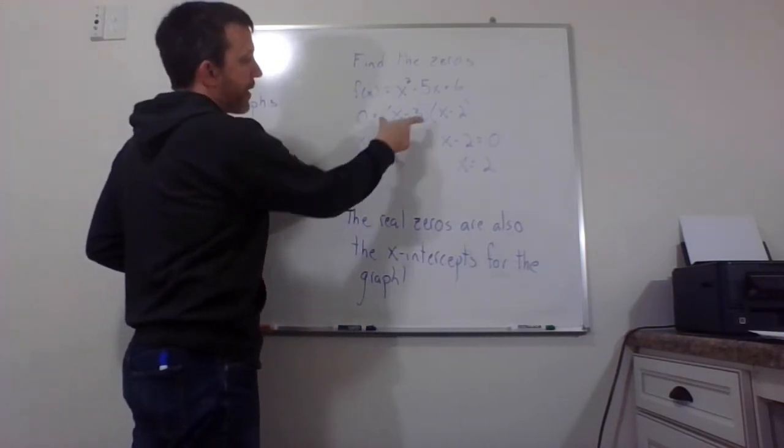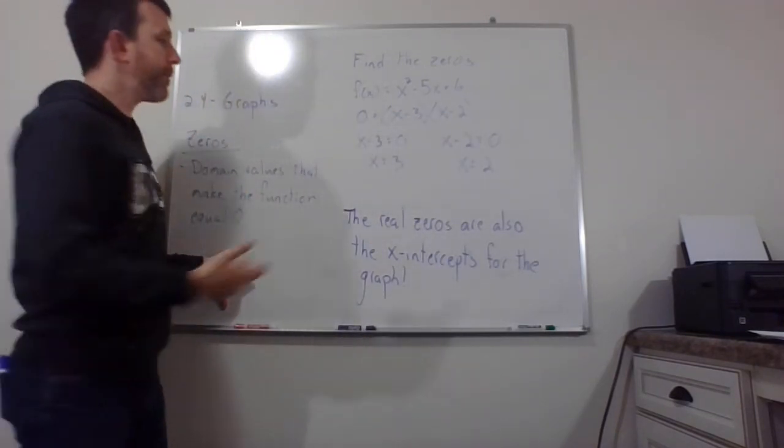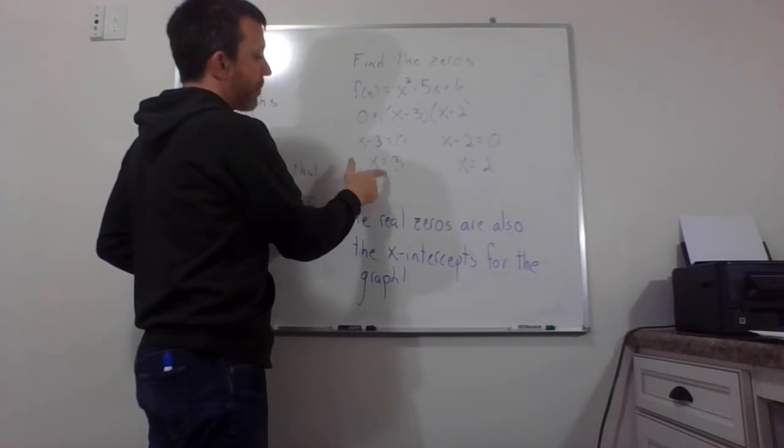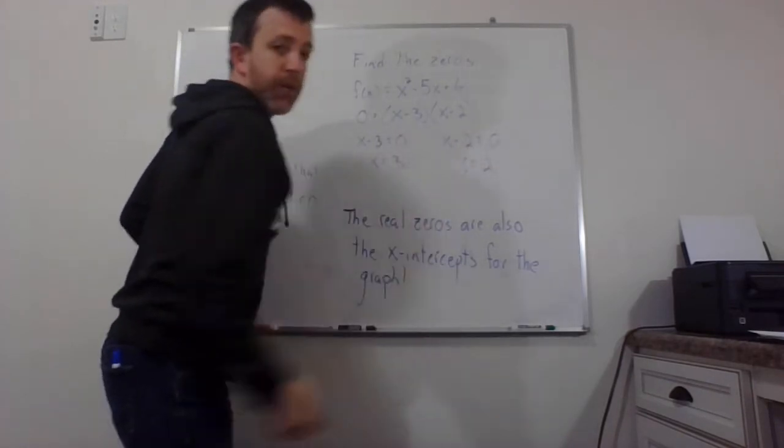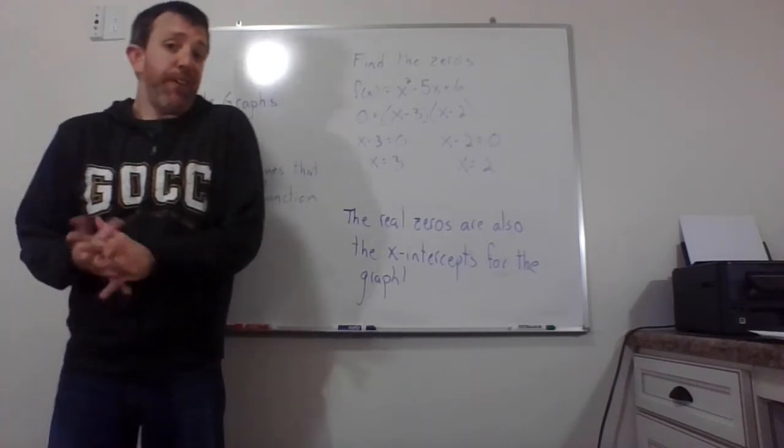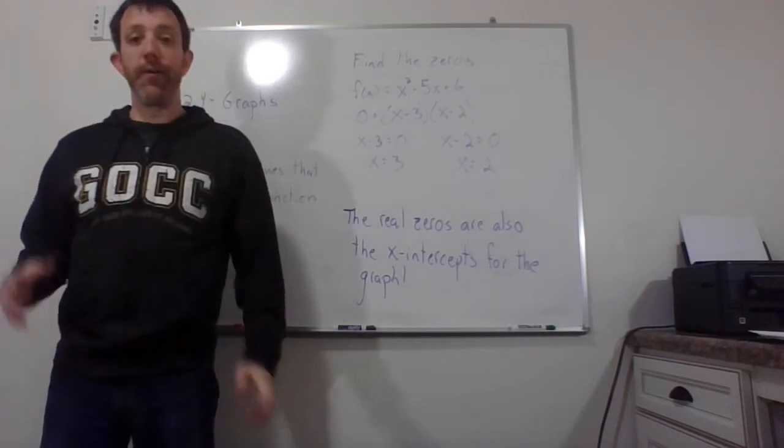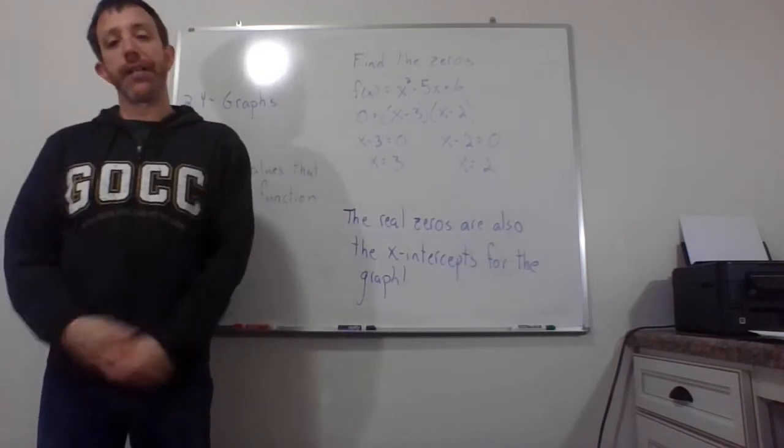So I split it up because we can split when we have pieces multiplied to equal zero. So x minus 3 could be zero, which gives us 3. x minus 2 could be zero, which gives us 2. So anyway, that's how we find zeros. We just set the function equal to zero and we figure out what x values will make that happen.